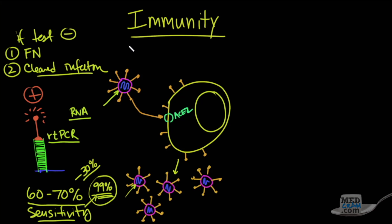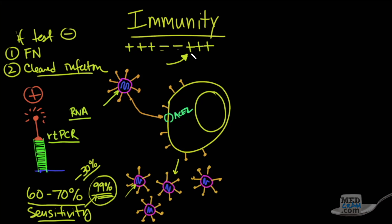If you do serial testing on somebody and you get a pattern like positive, positive, positive, negative, negative, positive, positive, positive — you don't really know if those negative results were false negatives, or if the patient truly cleared the infection and then got reinfected. You especially can't tell when you have a sensitivity that is less than 100 percent.